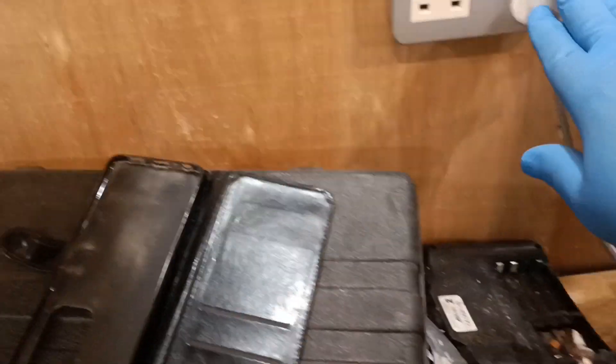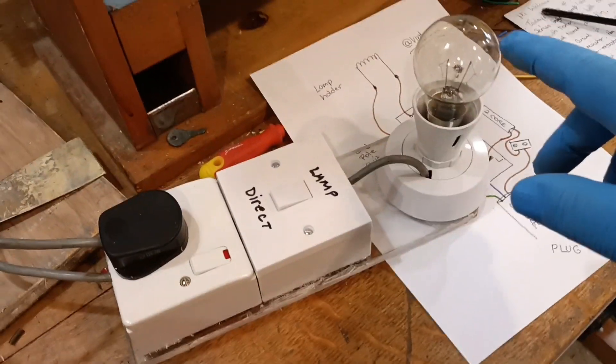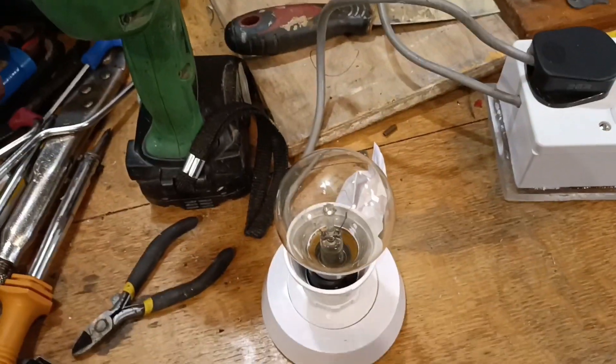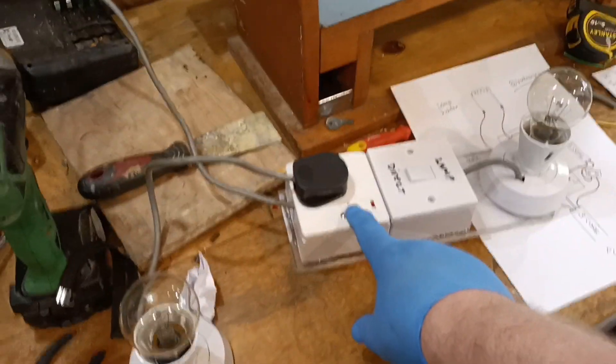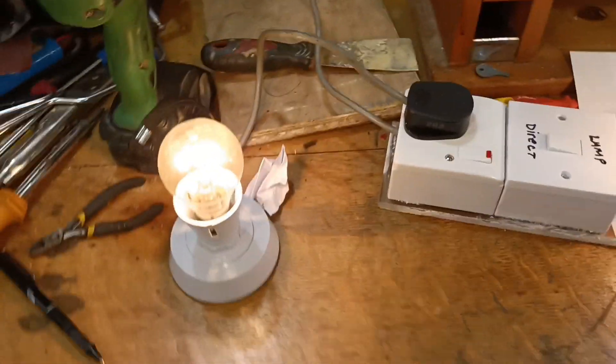I'm going to turn this on now. These are 75 watt bulbs. Ideally you want 100 watt, but 75 watt will do. So I'm going to turn them on now. You can see they're both half dim. That's because it's going through the lamp first.